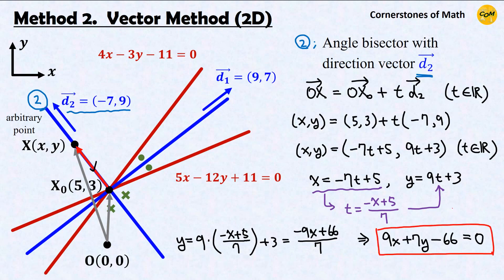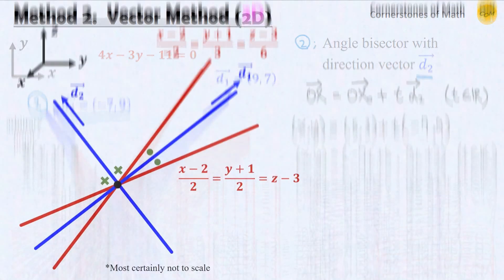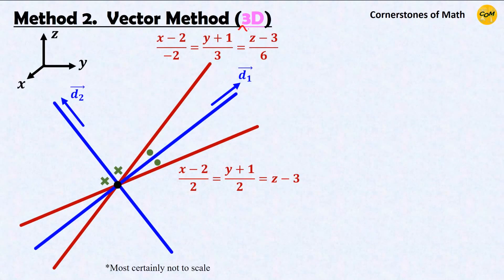So that is the vector method. Although this method looks much more complicated than the first method, it is the only practical method when it comes to 3D cases. So let us take a look at the 3D case right now. The most notable feature in 3D coordinate geometry is that in order to indicate directions in 3D space, vectors are absolutely necessary.